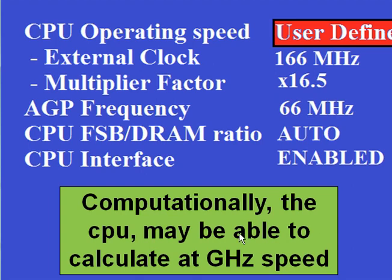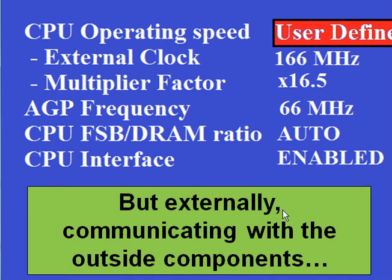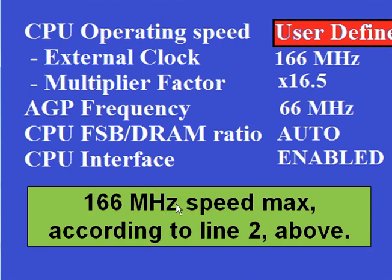Computationally, the CPU may be able to calculate at gigahertz speed, but those gigahertz speed computations are internal. Externally — going outside the CPU die, communicating with outside components — 166 megahertz is the max speed, according to the line noted above.